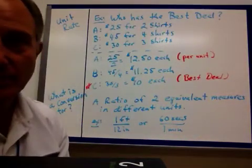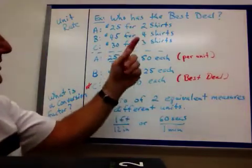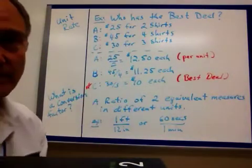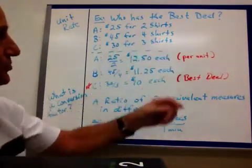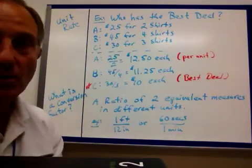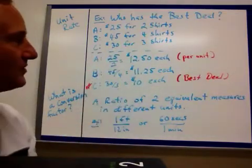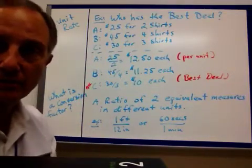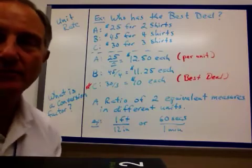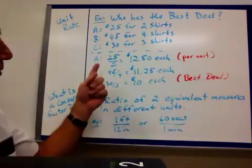Let's take a look at an example of a unit rate. Who has the best deal? You go into a store or you're looking at some ads in the paper. You're looking to buy a shirt. Store A says they've got $25 for two shirts. Store B is advertising, we'll sell you four shirts for $45. And store C says, we'll sell three shirts for $30. Who's giving you the best buy per unit, per shirt? How much for each of them?